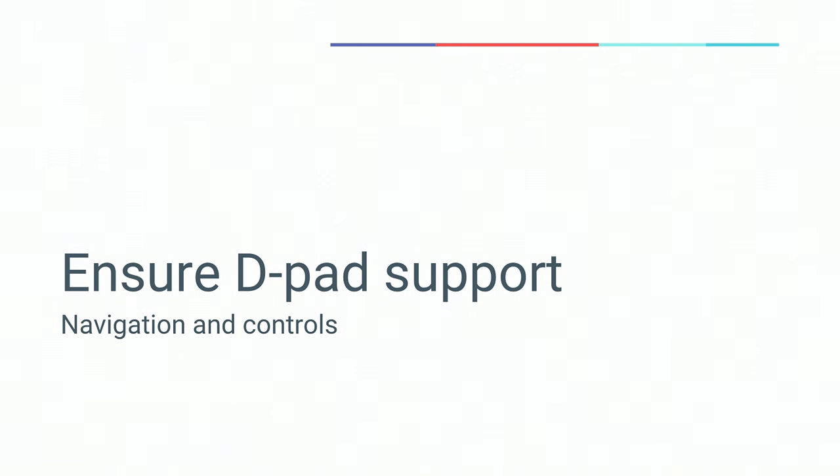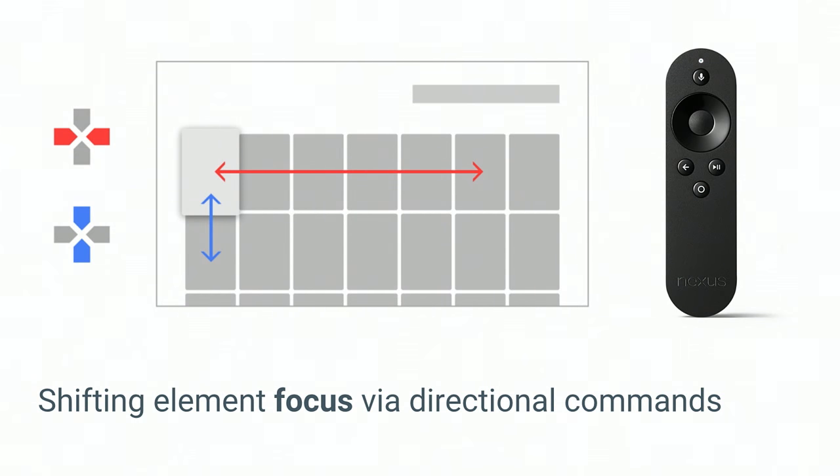This is the most important part about bringing your app to Android TV: UI navigation and controls. With no touch screen available, we rely on the D-pad — directional pad — which is the de facto way to navigate on Android TV. Touch screens let you tap directly to focus; on TVs we don't have that luxury. Instead, we progressively shift focus from element to element through the UI. On Android there are several ways focus is handled — the focusable attribute, next focus attributes, and requestFocus.